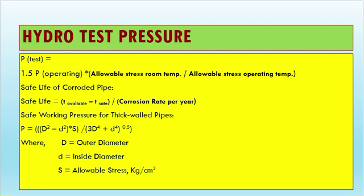The safe life of a corroded pipe is calculated as: Safe Life = (t_available − t_safe) / corrosion rate. This formula gives the remaining safe service life of a corroded pipe.